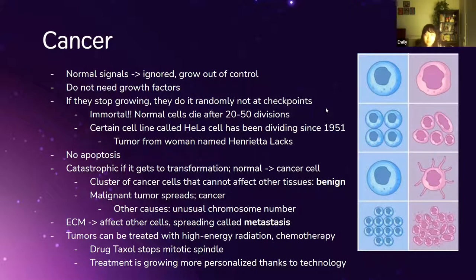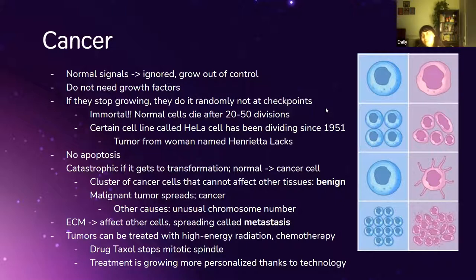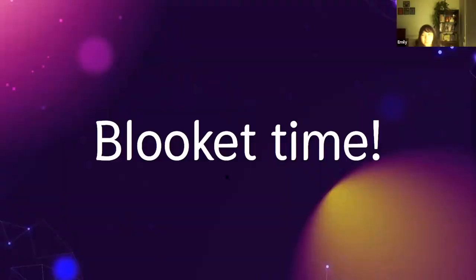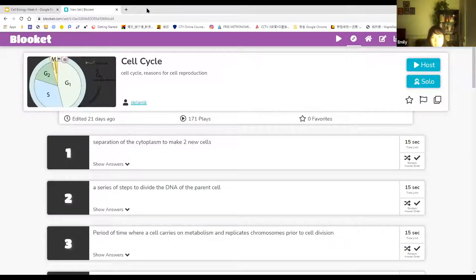Sometimes cancer doesn't spread — these are called benign tumors, which are easy to remove through surgery. But once a tumor becomes malignant, it spreads to other tissues and those cells become cancer too. This spreading is called metastasis. These tumors can be treated with high-energy radiation and chemotherapy, which uses toxic chemicals. There's also a drug called Taxol that targets cancer by stopping the mitotic spindle from forming in mitosis and meiosis. Treatment is becoming more personalized thanks to technology.